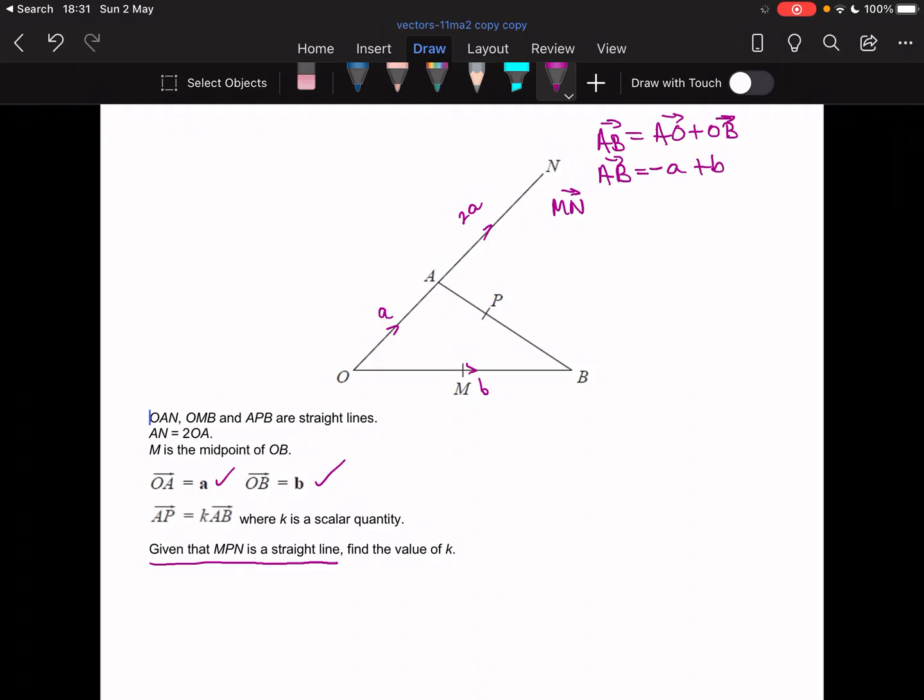Let's start with MN. So MN is equal to MO plus OA plus AN. So MN is equal to... this MO, I'm going against the arrow, so I know it's going to be a negative number. The whole line is b, so that bit is going to be half b.